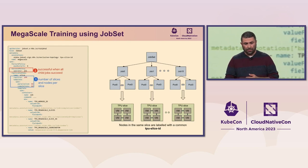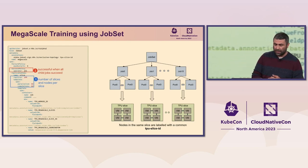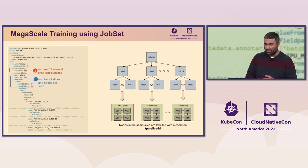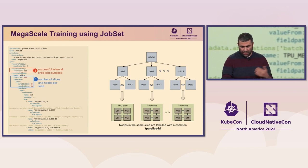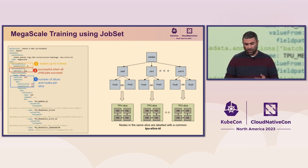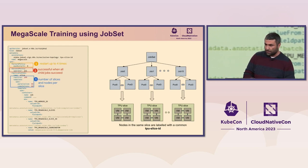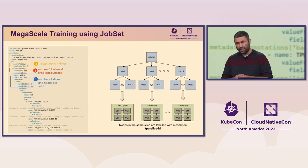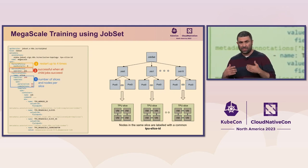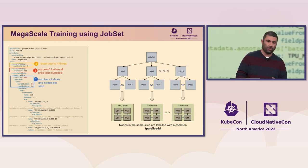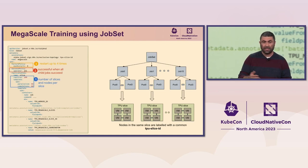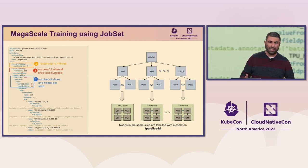The 'number of replicas' parameter specifies how many index jobs need to be created. In the success policy, you can specify that the whole workload is successful only if all the jobs finish successfully. With failure policy, right now we have one type: if anybody fails, the whole job fails. But you can specify how many times you want to restart it, giving you an automated way to restart the whole workload. It does this by recreating all the jobs when a failure happens, forcing a restart.